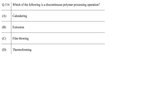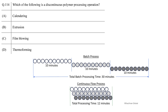In this question we need to identify the polymer processing operation which is discontinuous. To answer this, either you know the process or you are aware of at least one product produced by these processes. Pipes and wires are produced by extrusion, and films are produced by film blowing — both are continuous products. They are cut into different sizes for different applications, but they are produced continuously.